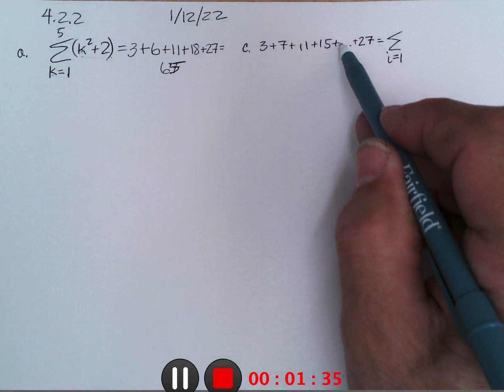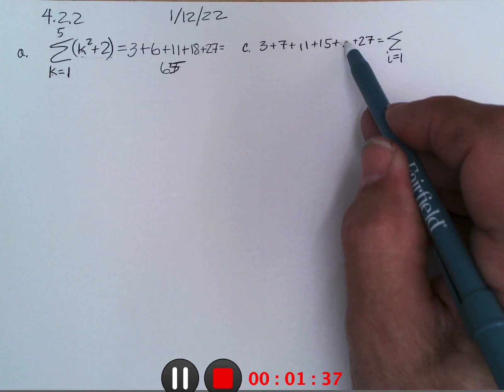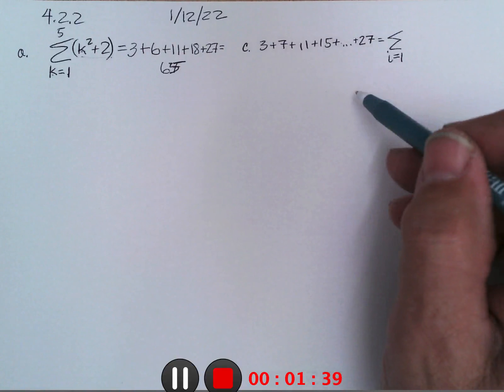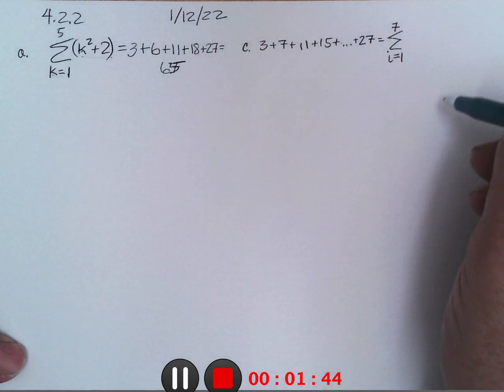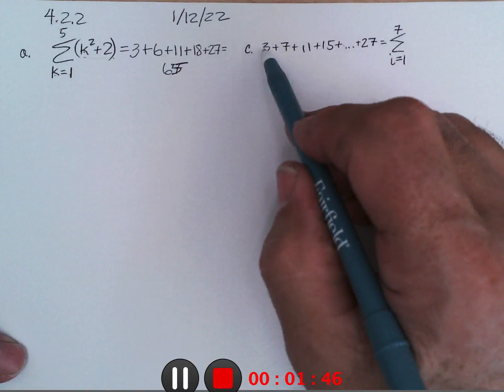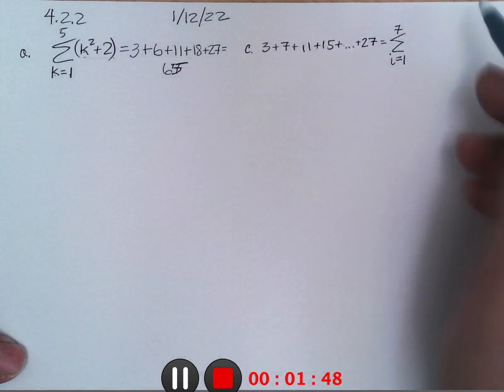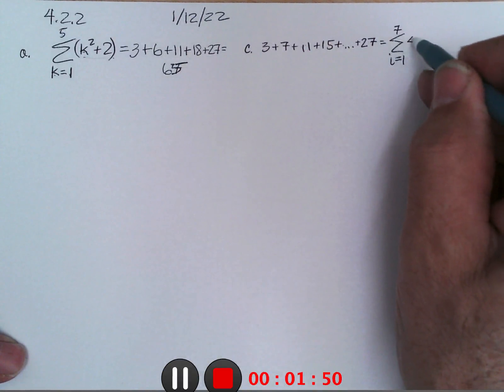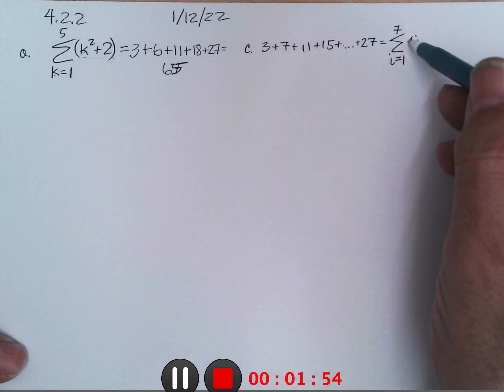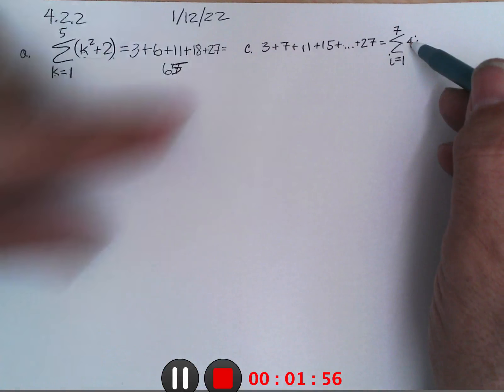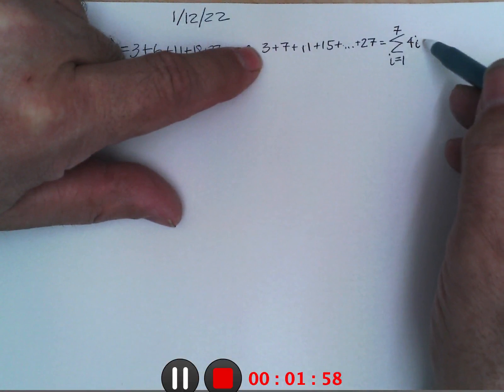23 the 6th term, 27 the last term, 7th term. So if I go from 1 to 7, since this is going up by 4 each time, I'd go 4 times i. When I put in 1, I get 4 times 1 is 4, but I want 3, so if I take away 1 that would work.